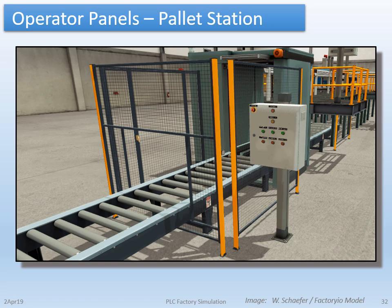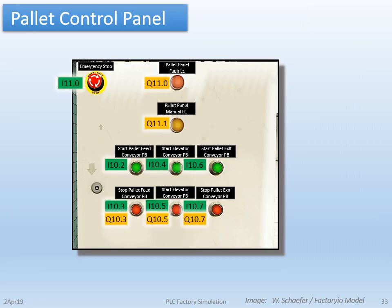Finally, the pallet entry and exit area has its own push button panel located at the bottom corner of the elevator where it is better to see the pallet conveyors. Manual panels within line of sight of the equipment to be controlled is a very important concept. Similarly, the pallet panel has manual indicators plus the appropriate buttons to start and stop the conveyors, and indicators to show the status of the conveyor motors.